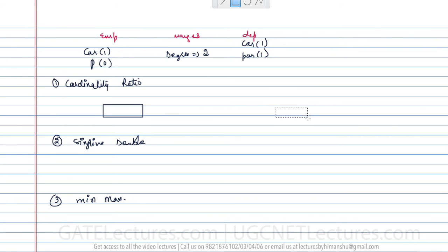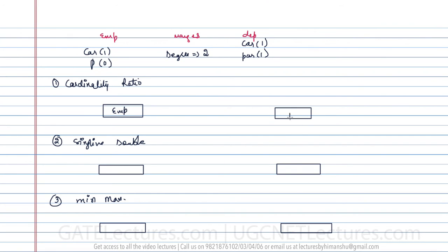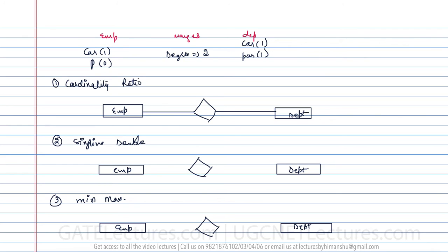Here we have three diagrams, each showing employee and department with the relationship between them. For the cardinality ratio representation: the cardinality of employee is one and the cardinality of department is also one, so we write 1 on each side — it is one-to-one.